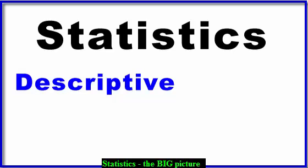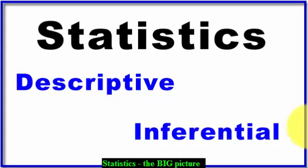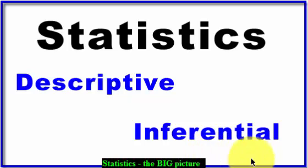The second important thing, and this is the harder stuff, is called inferential statistics. And like the name sounds, we make inferences about populations from information from samples.